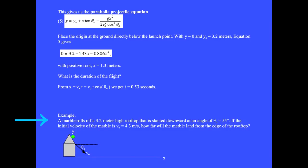For example, a marble rolls off a 3.2 meter high rooftop that is slanted downward at an angle of θ₀ equals 55 degrees. In the equation, we take θ₀ equal minus 55 degrees, which is the same thing as plus 305 degrees. If the initial velocity of the marble is v₀ equals 4.3 meters per second, how far will the marble land from the edge of the rooftop?